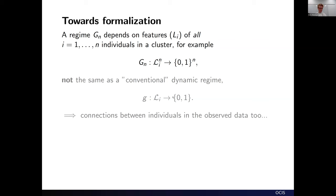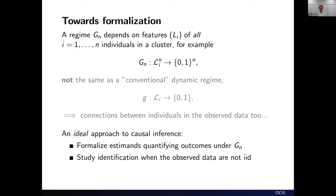These treatment regimes would be functions of potentially the covariates of all individuals in a cluster, which differs from the conventional dynamic treatment regime literature where treatment rules for individual i are based only on that individual's characteristics. Additionally, not only might there be dependencies between units under the counterfactual regimes we want to study, but also in the observed data — because doctors in real hospital registries made decisions that depended not just on one individual's covariates but possibly on others in the ward simultaneously. This means we do not have IID data.